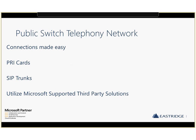The public switched telephone network — how do you get Lync connected to voice? There are a lot of options. SIP trunks are becoming more and more popular; if you have the bandwidth available, you can do IP SIP trunks directly from your telephony provider or CLEC to your Lync environment. PRI cards are another good option — a lot of IP PBXs have PRI cards and you can easily deploy one in a server and connect Lync that way, though you'll need multiple PRI cards for redundancy. We recommend utilizing Microsoft-supported third-party solutions from a PRI card or SIP trunk standpoint.